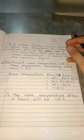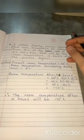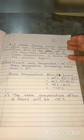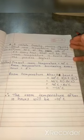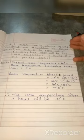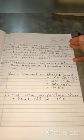Exercise 1.3, sum number 6. Here we have one word problem. A certain freezing process requires that room temperature be lowered from 40 degree Celsius at the rate of 5 degree Celsius every hour. What will be the room temperature 10 hours after the process begins?